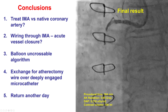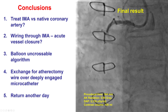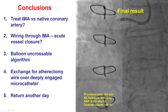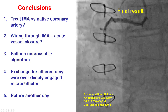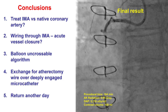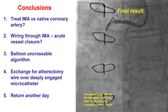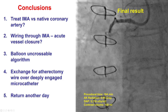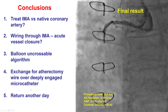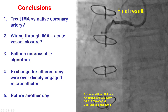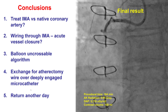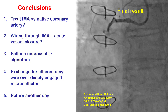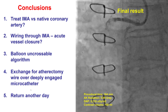Fourth, we illustrate how a deeply engaged microcatheter into the uncrossable lesion can be used to successfully exchange the 0.014-inch guidewire for the atherectomy wire. And finally, this is another example where when things don't seem to work, especially if the patient is stable, it may be best to stop and come back another day for a repeat attempt.